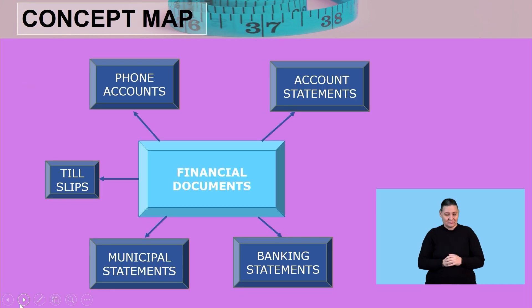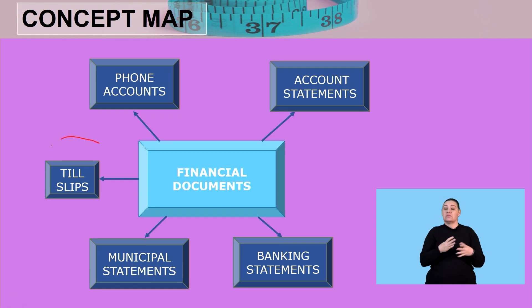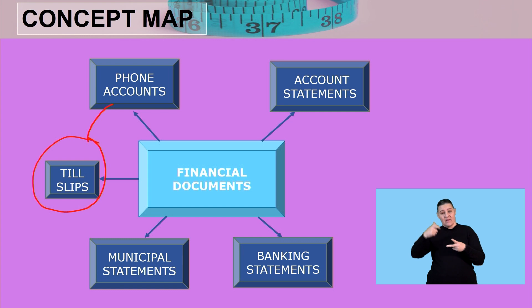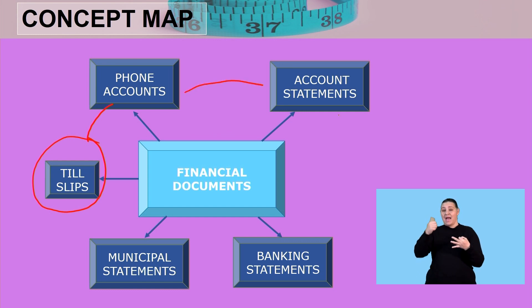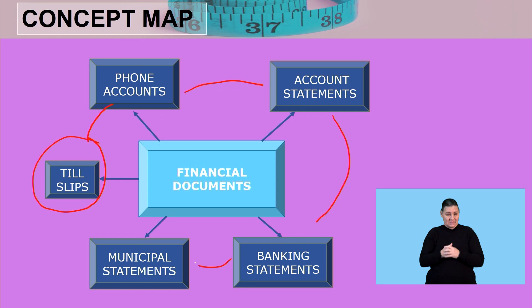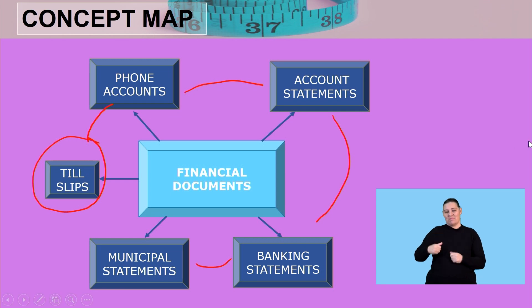All right, concept map for today. We're going to start with till slips, make our way to phone accounts, account statements, banking statements, then we'll end off with municipal statements.